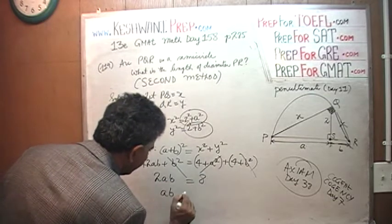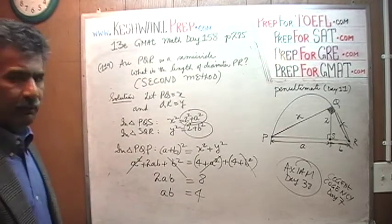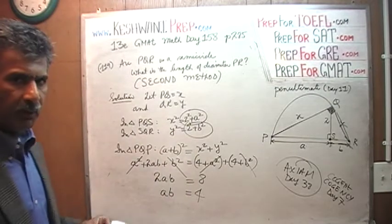And therefore A times B is 4. That's it, we are done. A times B is 4. And now we are going to look at our two statements.